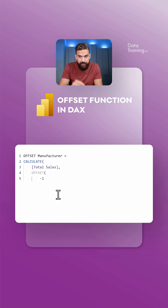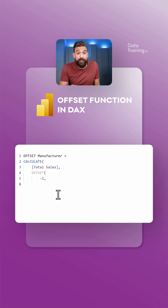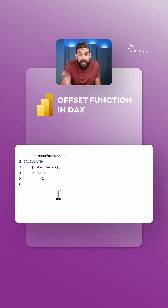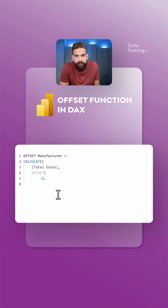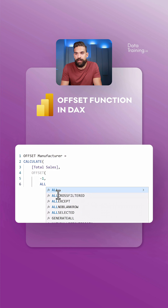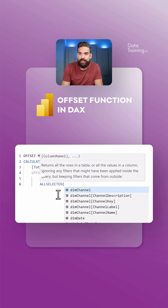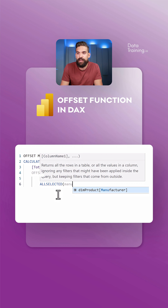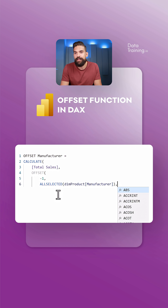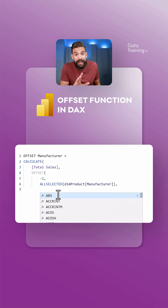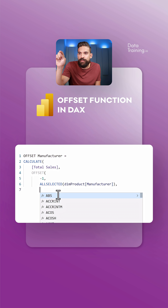Let's start typing OFFSET. The first argument is how many items up or down we want to go — let's say minus one, so one manufacturer down. The second argument is the field or column in which we want to move our item. Here that is manufacturer, so we select it and refer to the manufacturer column.